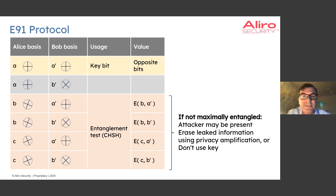And four of the basis choice combinations — the ones shown in red at the bottom of this table — are exactly the CHSH experiments that we described before.